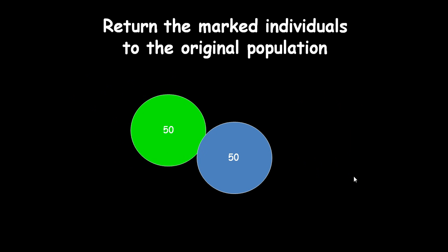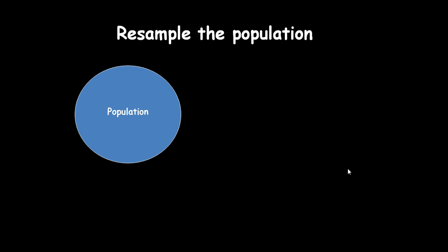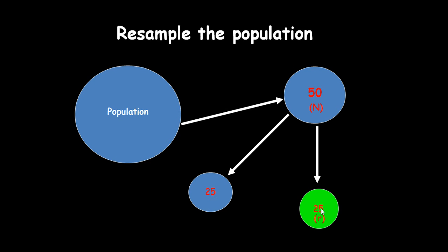Now, we release them back into the original population, and leave them to mix up. Let's leave them to mix up. We come back, and we take another sample of the population, again at random. Let's take 50 again. Now, you know that we marked 1 in 2 of the original population. Of course, you wouldn't know that if you were doing this for real. But how many would you expect of this 50 to be marked? Well, 1 in 2 if they've mixed up randomly, and we've sampled randomly. We would expect 25 unmarked, and 25 with the mark on. Sprayed green in our case.